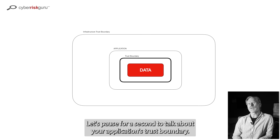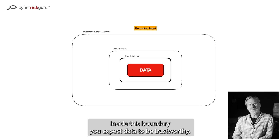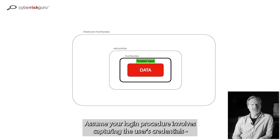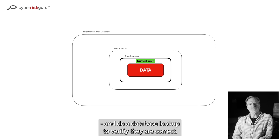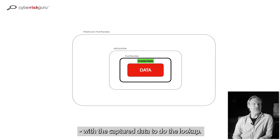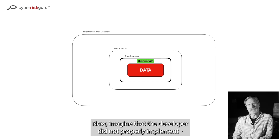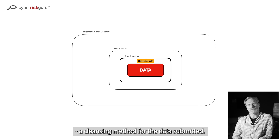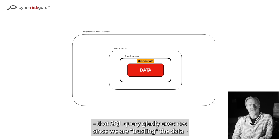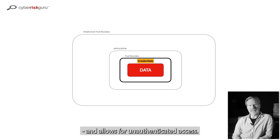Let's pause to talk about your application's trust boundary. Inside this boundary, you expect data to be trustworthy. To become trustworthy, data must undergo proper input validation. Assume your login procedure involves capturing the user's credentials and doing a database lookup to verify they are correct. The procedure therefore crosses your trust boundary with captured data to do the lookup. Now imagine the developer did not properly implement a cleansing method for the submitted data, so an attacker is able to send a carefully constructed username that the SQL query gladly executes, since we are trusting the data.